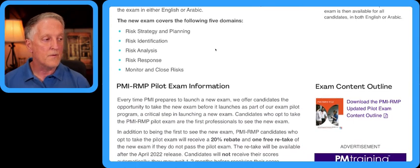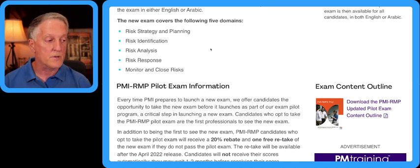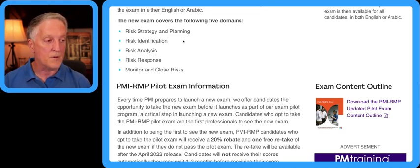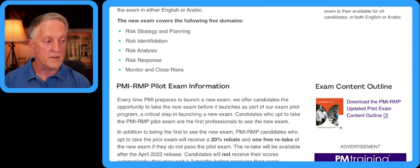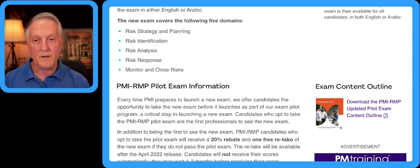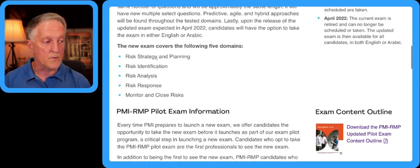You'll see five domains, and these domains are somewhat different than what we've seen in the previous exam content outline. If you download the RMP pilot exam content outline it will give you the details. But here are the five new domains: risk strategy and planning, risk identification, risk analysis, risk response, and monitor and close risk.